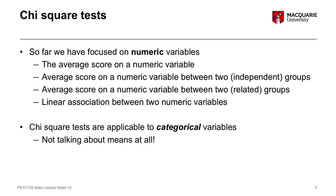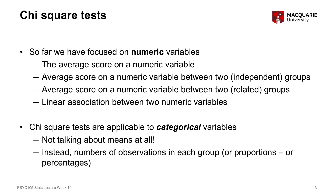We're not going to be talking about mean scores, average scores, any kind of measure of central tendency, or measures of variability like standard deviation or standard error. Instead, what we're talking about are numbers of observations in each group of a categorical variable — expressed as frequencies — as well as proportions or percentages. We're thinking about how many people we have in each group and what proportion or percentage of our overall sample falls into each of those groups.